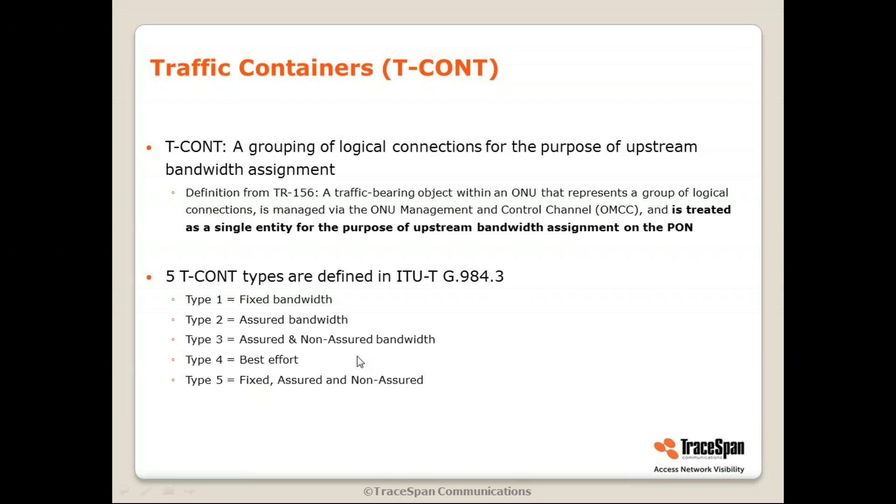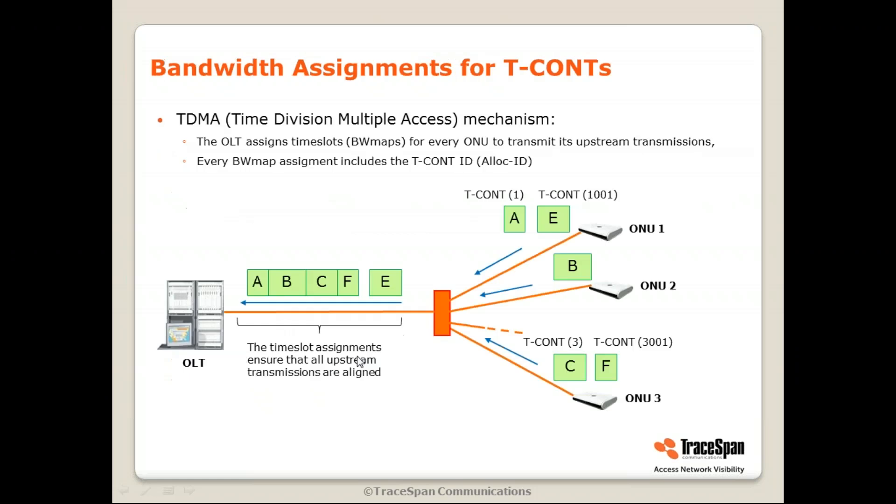The five TCON types include fixed, assured, assured and non-assured, best effort, and so on, each enabling the OLT to allocate bandwidth accordingly.